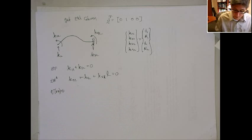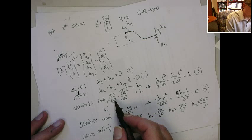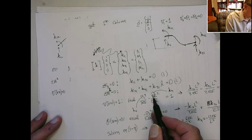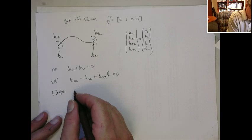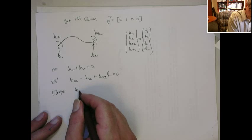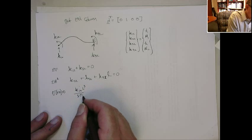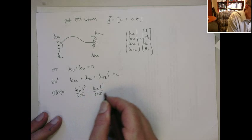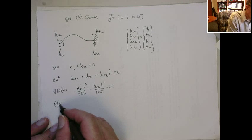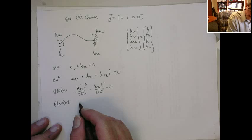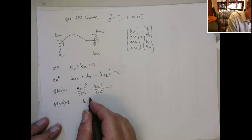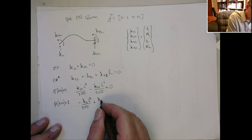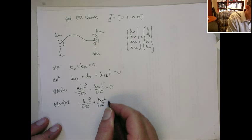Going back to the equations we had before, we're going to use this equation but put in different values for P and M. In this case, P is going to be K1,2 and M is going to be K2,2. So we get K1,2 times L cubed over 3EI minus K2,2 times L squared over 2EI has to go to zero, because the deflection is zero. And the rotation at x equal to zero goes to 1, so that gives me minus K1,2 times L squared over 2EI plus K2,2 times L over EI, that has to equal 1.